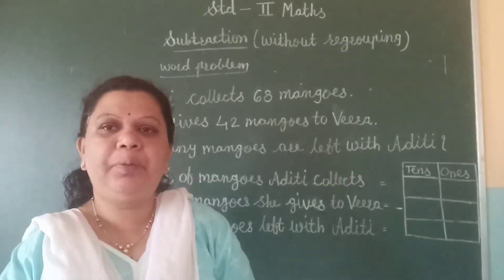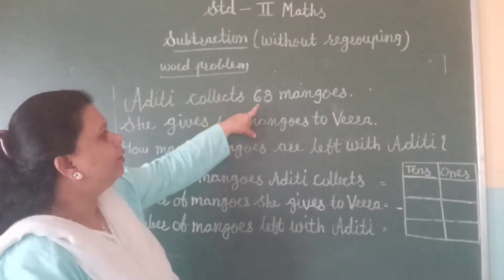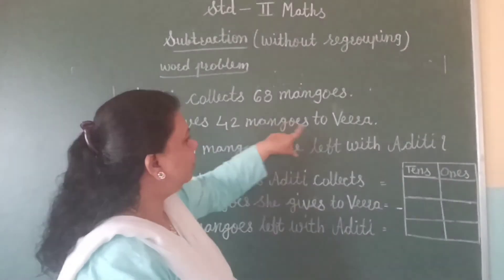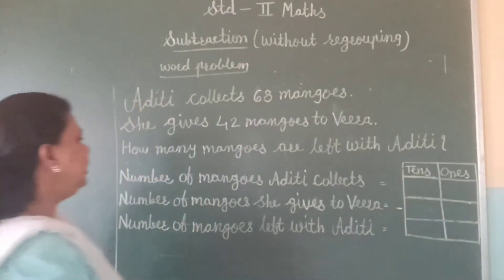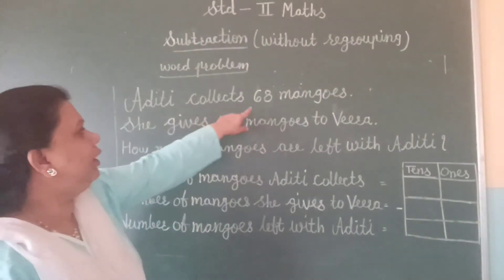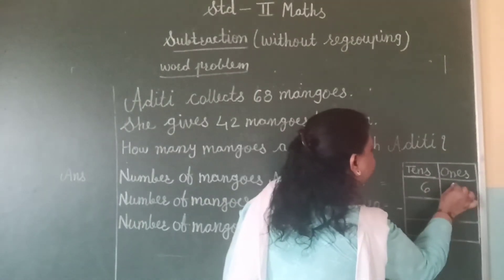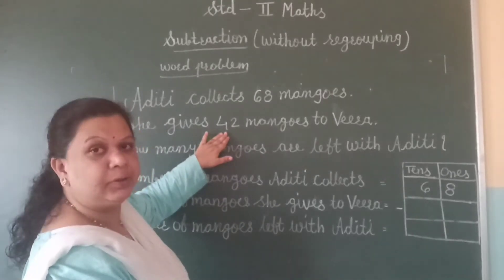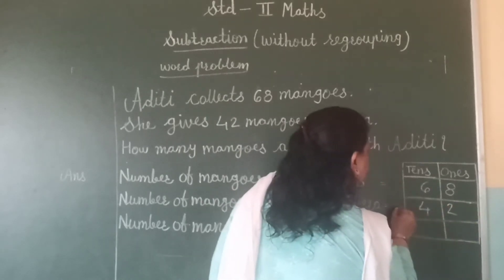Now, we will solve a word problem. First, we will read this example. Aditi collects sixty-eight mangoes. She gives forty-two mangoes to Vira. How many mangoes are left with Aditi? Let us solve. How many mangoes she gives to Vira? Forty-two. Give your minus sign.